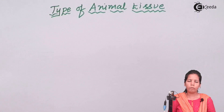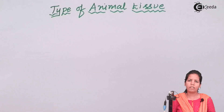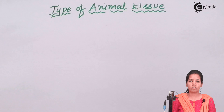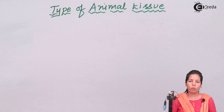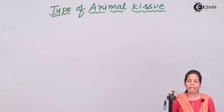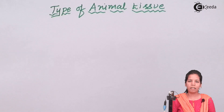Animal tissue. Before we move on to the different kinds of tissues available in animal cells, let's understand the definition of what a tissue is. The smallest structural unit of our body is a cell. When a number of cells come together, what we get is tissues. When tissues come together we get organs, and when a number of organs of similar type come together we form an organ system. So tissues can be defined as a group of cells which are similar in structure and function, living together and performing a certain function.